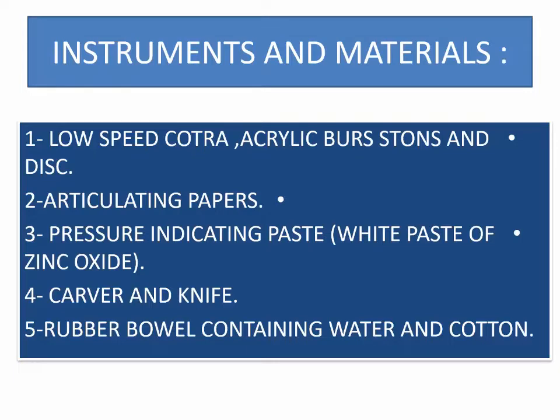The instruments and materials needed for this step include: low-speed handpiece with acrylic burs, stone and disc, articulating papers, pressure-indicating paste or white paste of zinc oxide eugenol, carbon paper, and a rubber bowl containing water and cotton rolls.